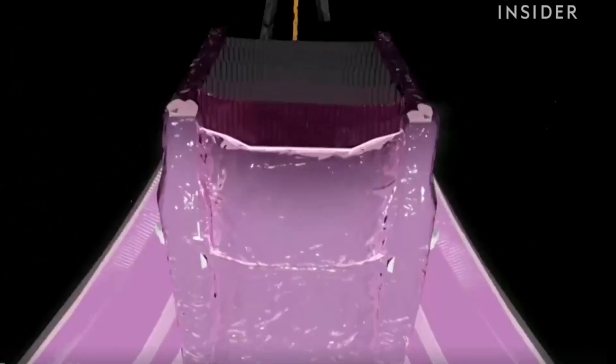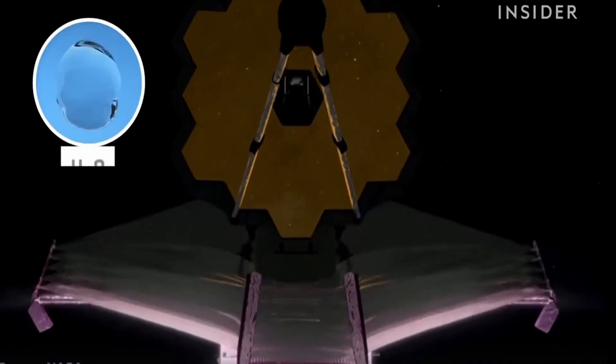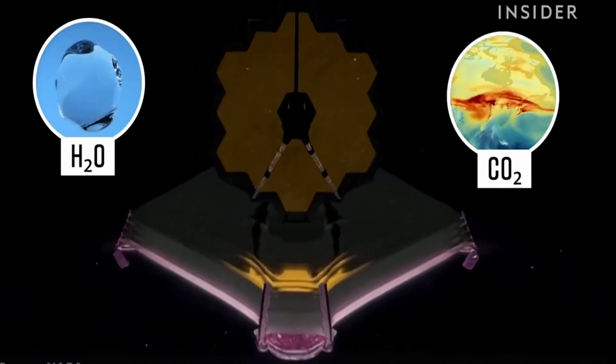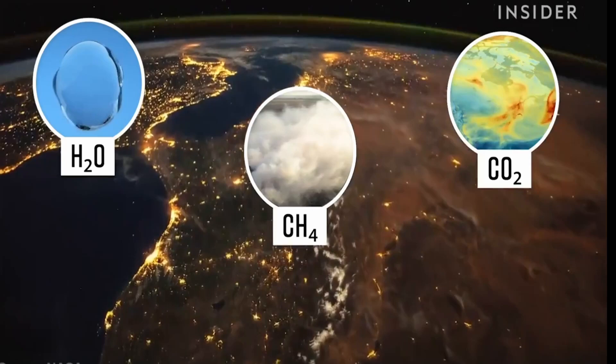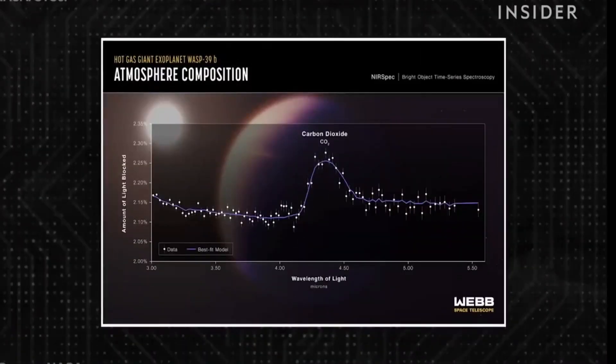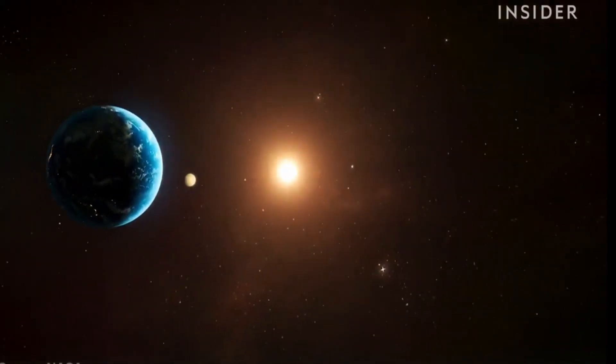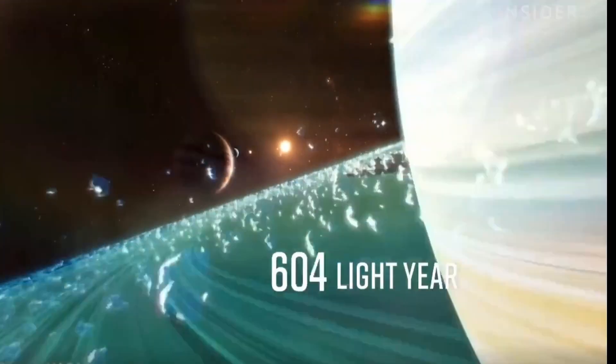The new telescope also sees infrared light, which exposes molecules like water, carbon dioxide, and methane - critical to life as we know it. And for the first time, Webb found carbon dioxide in the atmosphere of a planet outside our solar system, about 700 light years away.